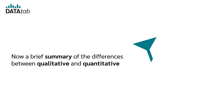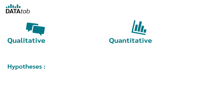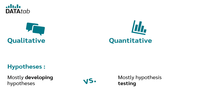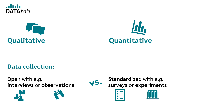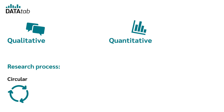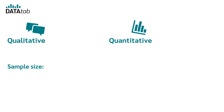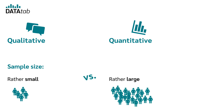Here is a brief summary of the differences between qualitative and quantitative. Regarding hypotheses: qualitative mostly involves developing hypotheses, quantitative mostly involves hypothesis testing. For data collection: qualitative uses open methods such as interviews or observations; quantitative uses standardized methods such as surveys or experiments. The research process is circular in qualitative and linear in quantitative. Finally, sample size is rather small in qualitative and rather large in quantitative.